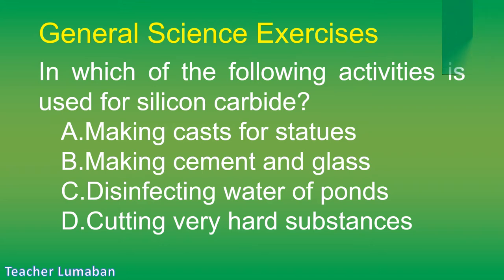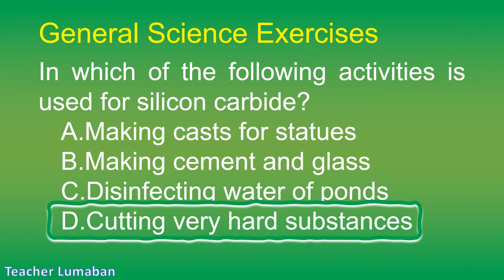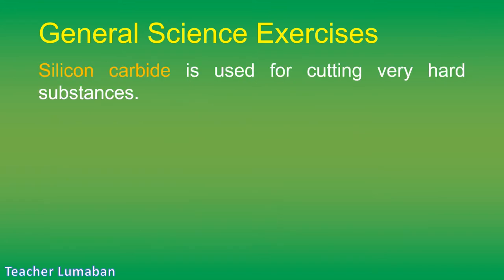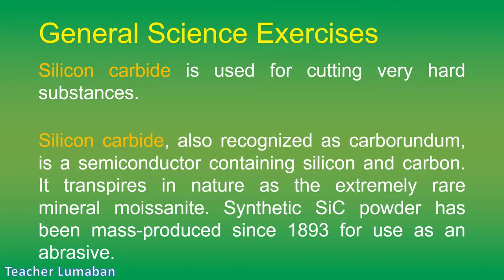The correct answer is Letter D: cutting very hard substances. Silicon carbide is used for cutting very hard substances. Silicon carbide, also recognized as carborundum, is a semiconductor containing silicon and carbon. It occurs in nature as the extremely rare mineral moissanite. Synthetic SiC powder has been mass-produced since 1893 for use as an abrasive.